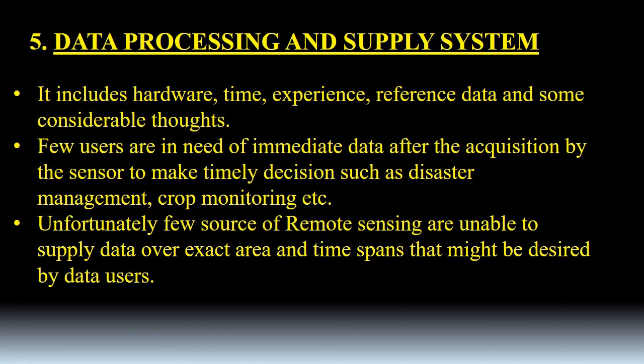The fifth one is the data processing and supply system. It includes hardware, time, experience, different data, and some considerable things. Few users are in need of immediate data after the acquisition by the sensor to make timely decisions, such as disaster management, crop monitoring, etc. Reasons we are facing a lot of floods and cloud bursting. Users might need the immediate data to identify the damage and defect in the particular affected area.